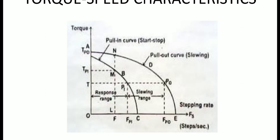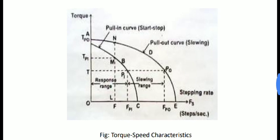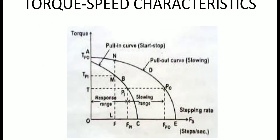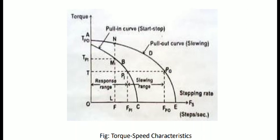In slewing mode, the motor must first operate at a point in start-stop mode, and then the stepping rate is increased to operate in slewing mode. Similarly, while switching off, it is essential to bring the motor from slewing mode back to start-stop mode before it is stopped.